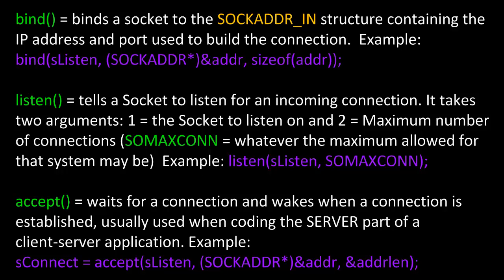Next is the listen method. This tells the socket to listen for an incoming connection. It takes two arguments: one, the socket to listen on, and two, the maximum number of connections. SOMAXCONN is whatever the maximum allowed for that system may be, so it's a symbolic constant that's often used in socket projects. An example of the syntax would be listen(sListen, SOMAXCONN), where sListen is an instance of a socket and SOMAXCONN is a symbolic constant indicating use the maximum number of connections allowed.